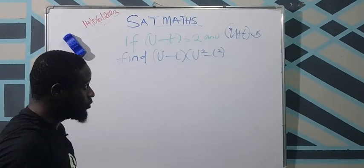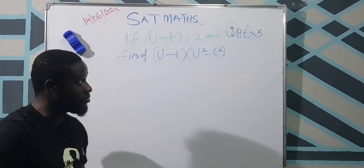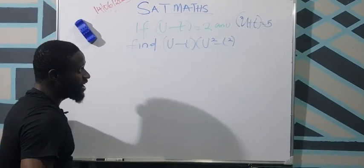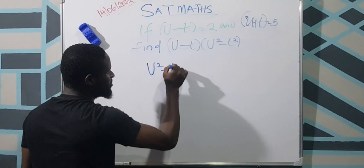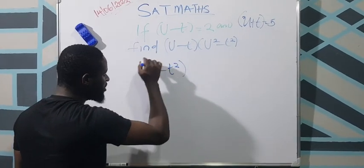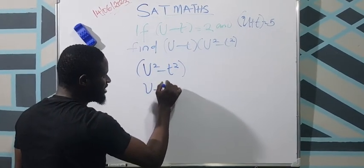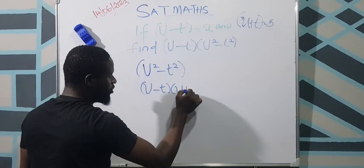So the first thing we need to do is take the complex form and factorize. We factorize this complex form where you have u square minus t square, which will be u minus t times u plus t.